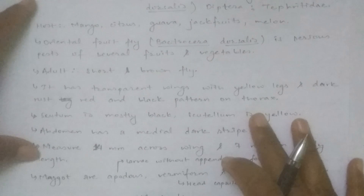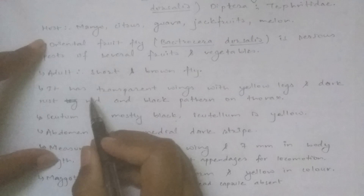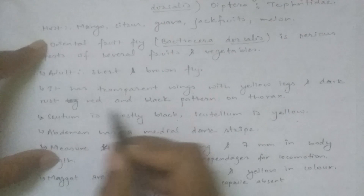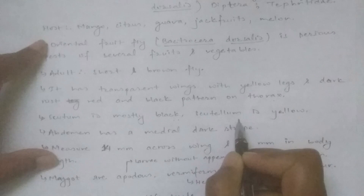It has transparent wings with yellow legs and a dark, rust-red and black pattern on the thorax. The scutum is black and the scutellum is yellow, and is distinctly visible in the diagram.